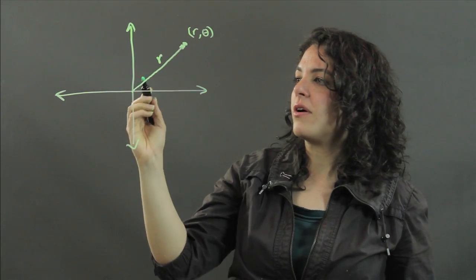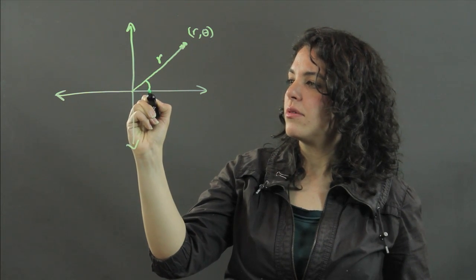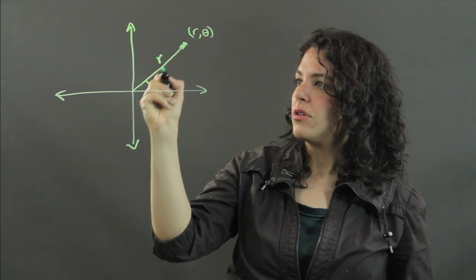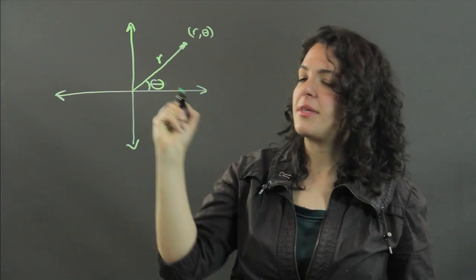This is r, and then the angle from this x-axis to this vector is theta.